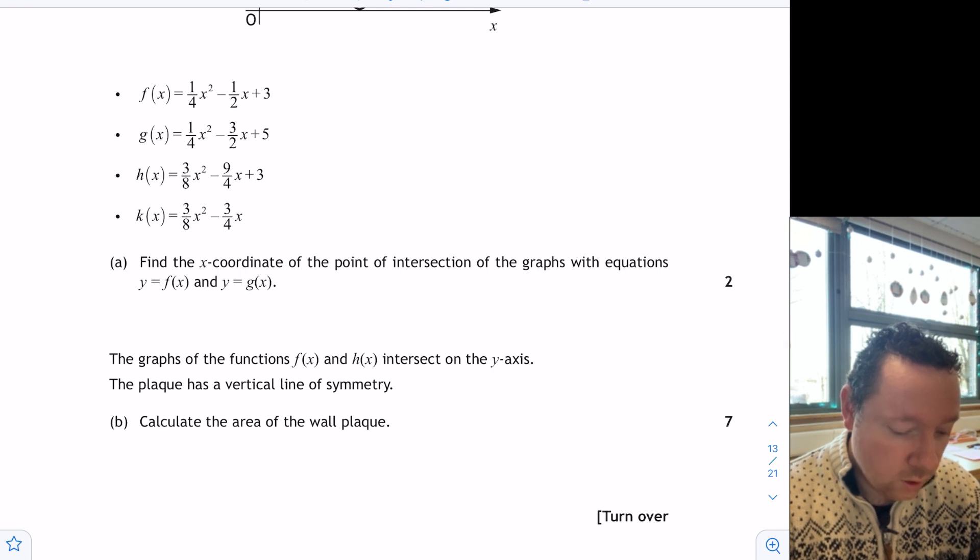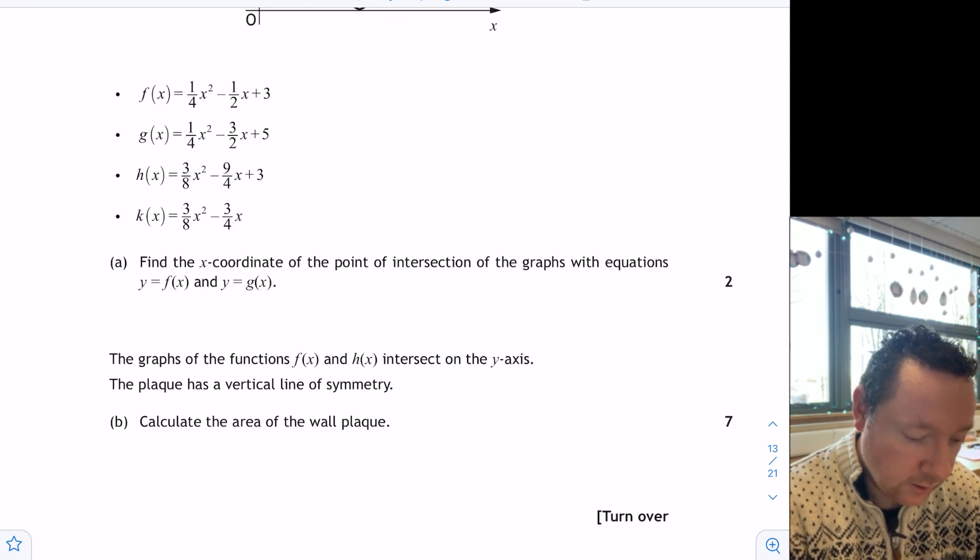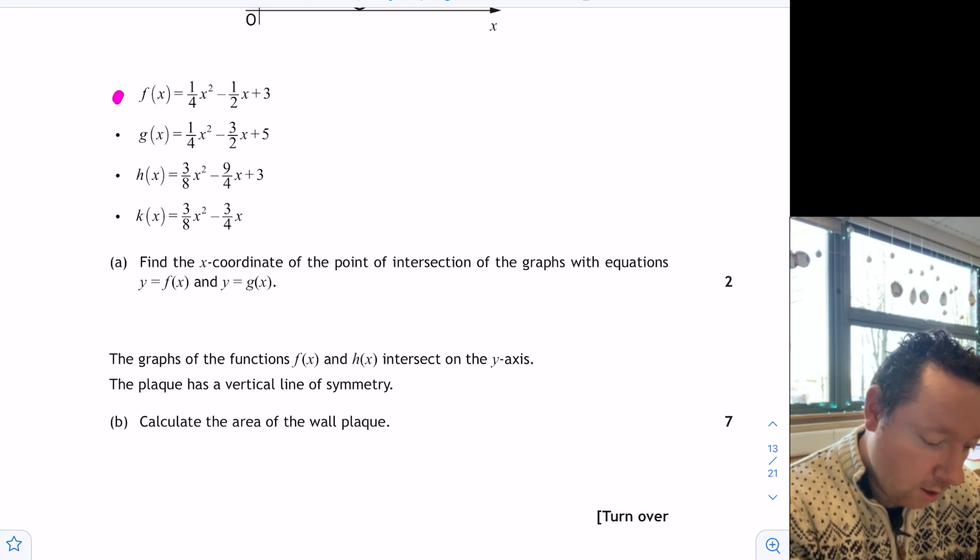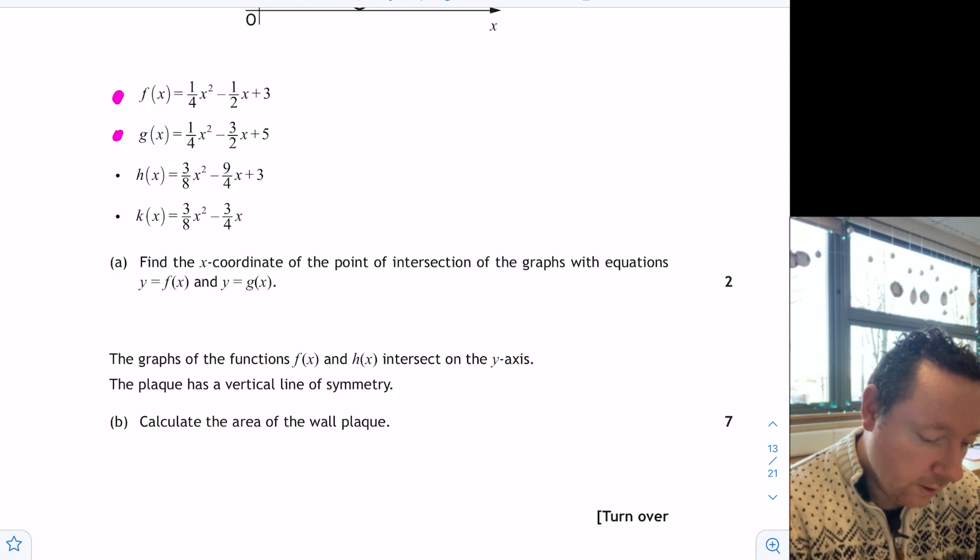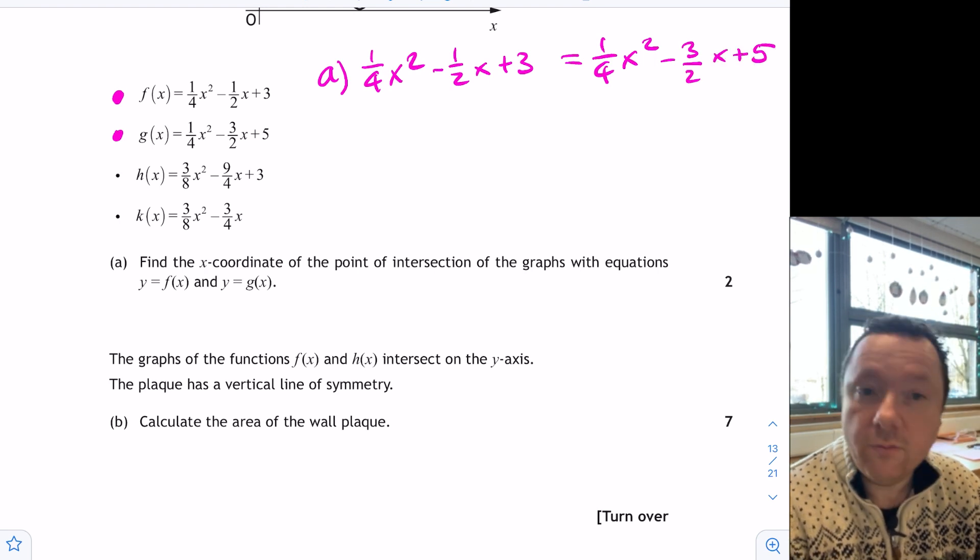So let's look at part A. Find the coordinate of the point of intersection of the graphs of y equals f(x) and y equals g(x). So point of intersection means simultaneous equations. So the two ones I need are this one and this one. Since that would equal y and y, I can just make both of these equal to each other. So to get one mark for part A, I'll just write a quarter x squared minus a half x plus 3 equals a quarter x squared minus 3 over 2x plus 5, and that will give you your first mark.